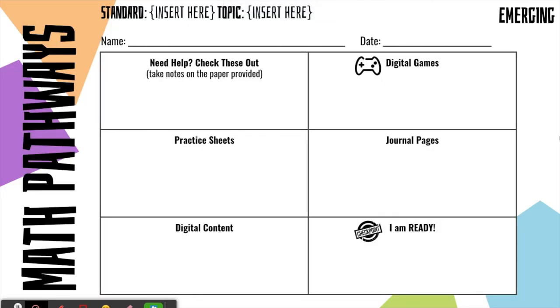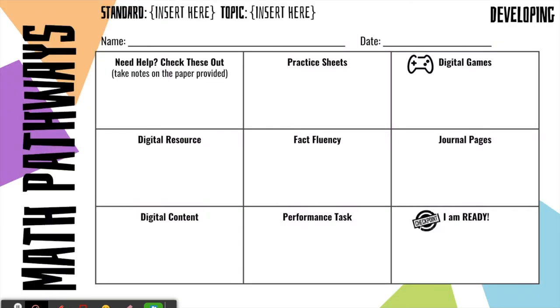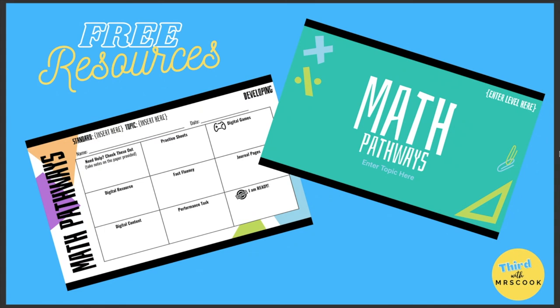Along with the blank template for the pathway board, I also wanted to include the printable handouts you can give to your students. I've removed the information from my example boards so you can go in and add what you'd like to use in your classroom. You have the emerging board, the video notes page where you can change the video names, the developing board with its video notes, and the mastery board with its video notes page. Before I go — these free resources will be available to you, including the digital and hard copy version of all three pathway boards. I hope you're able to utilize these boards in your classroom as you take personalized learning to the next level. Thanks for watching.